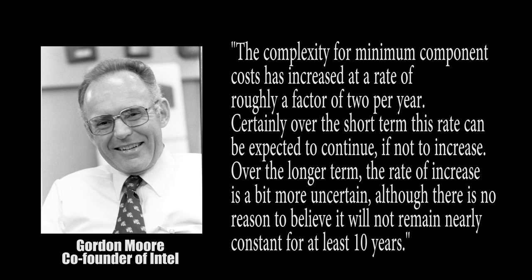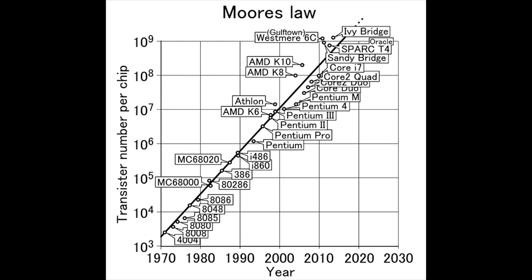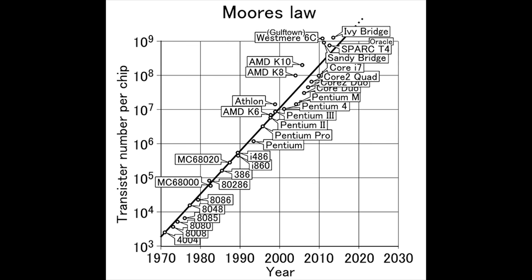Moore was right. Among flash memory manufacturers in particular, fabrication processes were doubling in complexity every one and a half to two years, and it's actually been increasing recently. As for central processors — namely Intel and AMD — things are a bit slower, but still trending. Just look at the last decade.